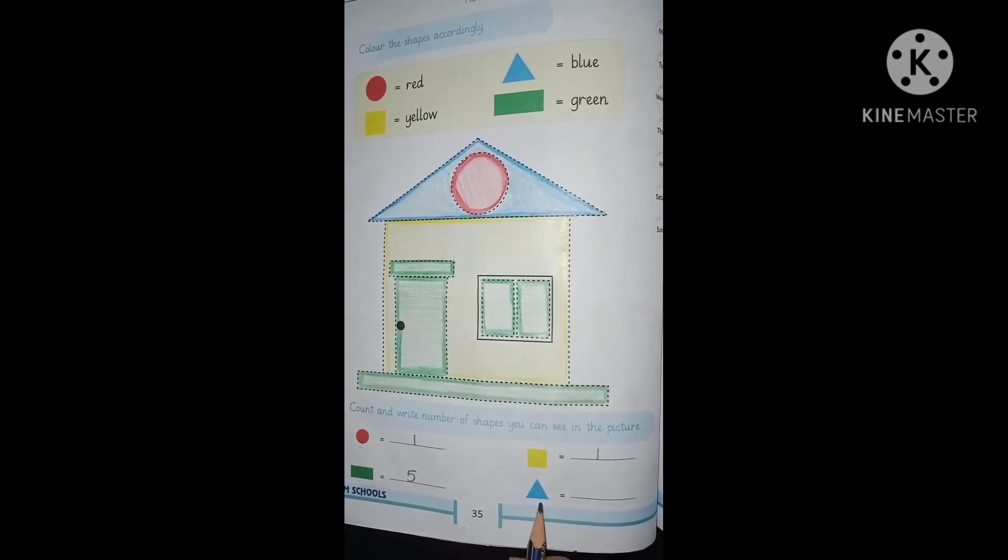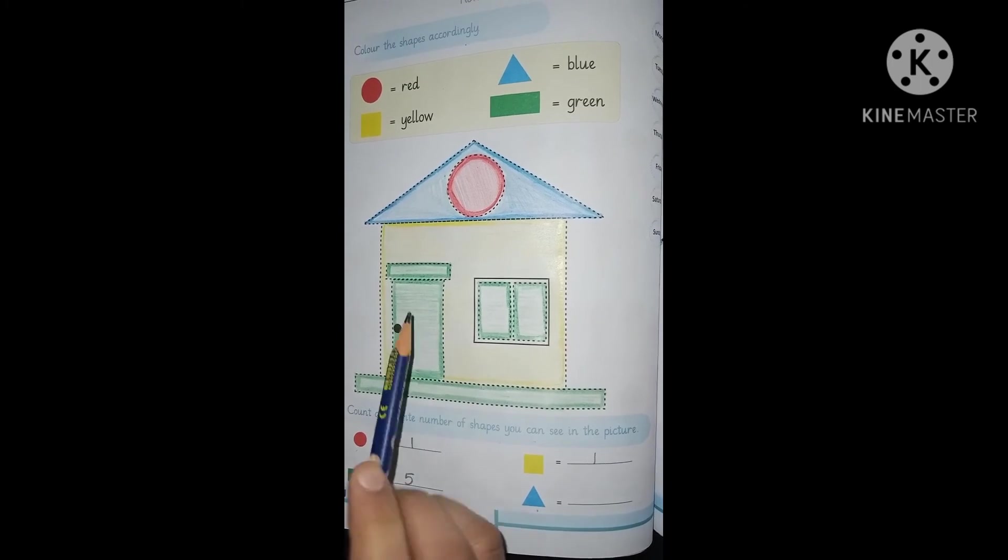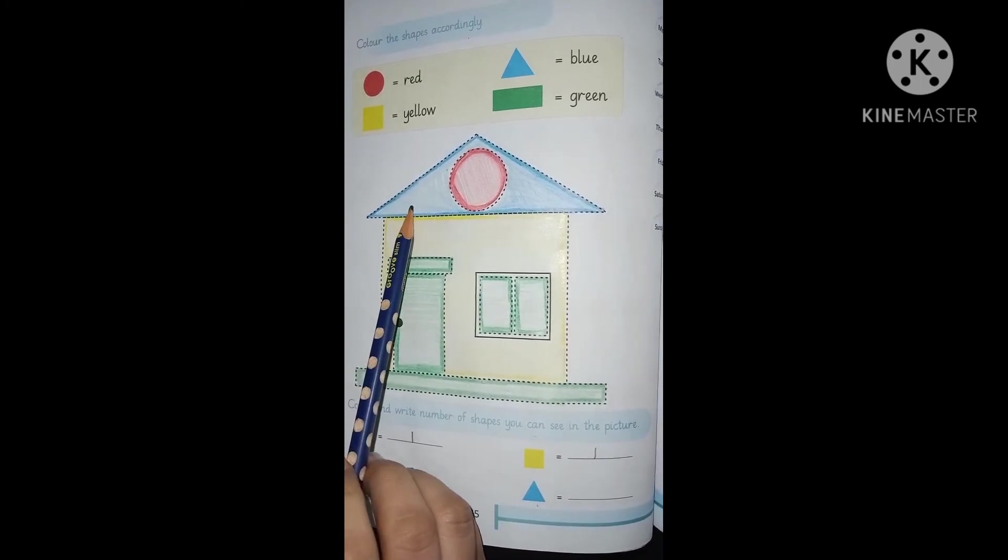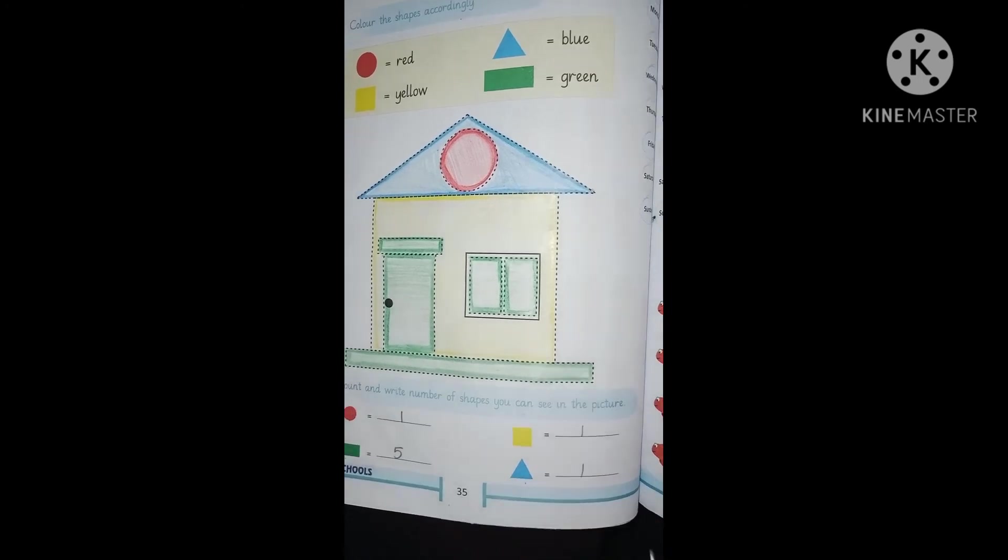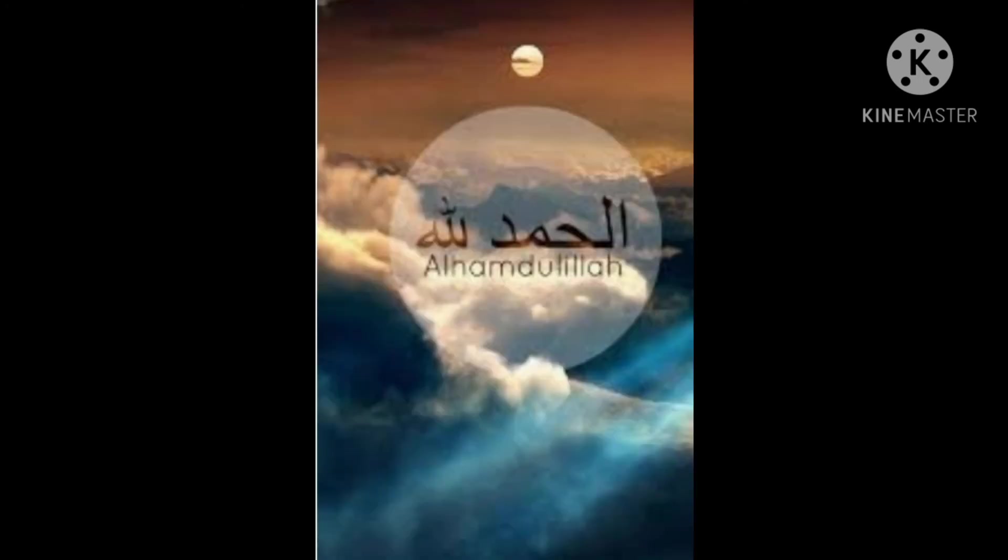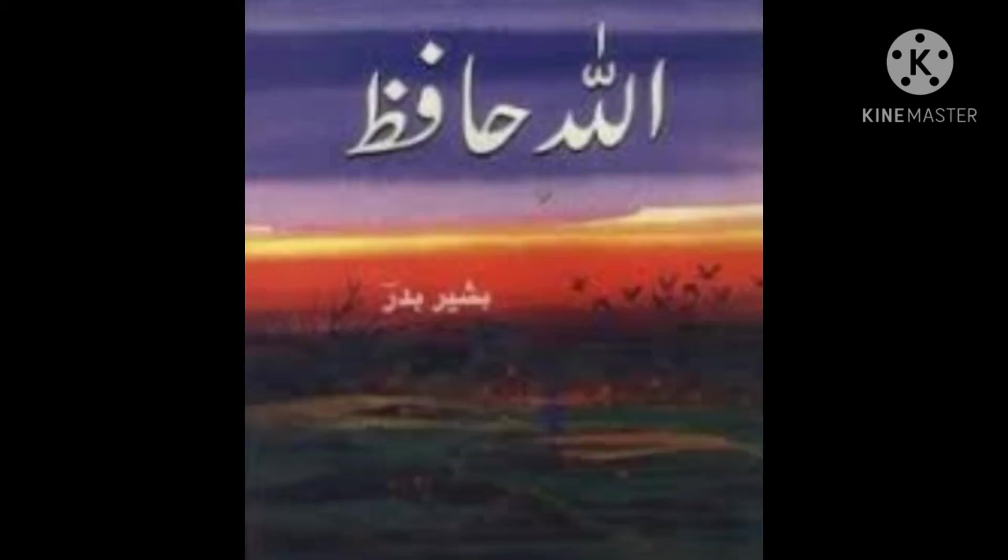How many triangles are there in this picture? Let's count. Yes, only this one. One triangle. So write here one. After finishing your work, you must say Alhamdulillah. My little kids, thanks for being so dedicated and hardworking. Allah Hafiz. Thank you.